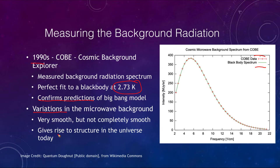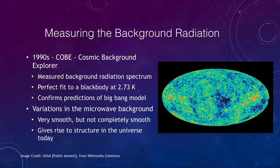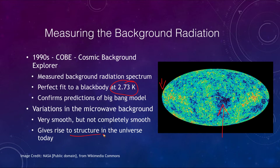Any other model will also have to explain this background radiation. Are there variations? When we map out the entire sky we see some areas in red which are warmer and some areas in blue that are cooler. However, these are measuring tiny fractions of a degree — tens of thousands to hundreds of thousands of a degree in variation. While slight, it is important because these denser and less dense areas are what gave rise to the structures we see in the universe today.